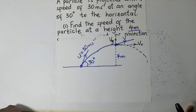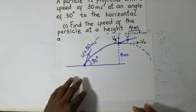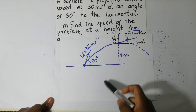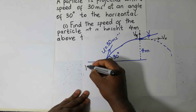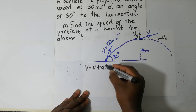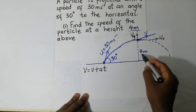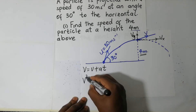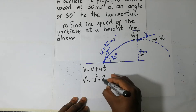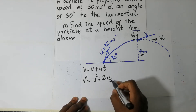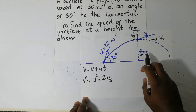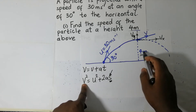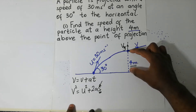We shall use the equations of motion. The most favorable one here is V squared equals U squared plus two AS, because if we used V equals U plus AT, there is no information about the four meters in that equation. Here, S is displacement, so the displacement of four meters helps us find V when the displacement in the y direction is four meters.